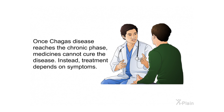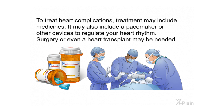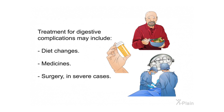Once Chagas disease reaches the chronic phase, medicines cannot cure the disease. To treat heart complications, treatment may include medicines, a pacemaker or other devices to regulate heart rhythm, or surgery — even a heart transplant may be needed. Treatment for digestive complications may include diet changes, medicines, or surgery in severe cases.